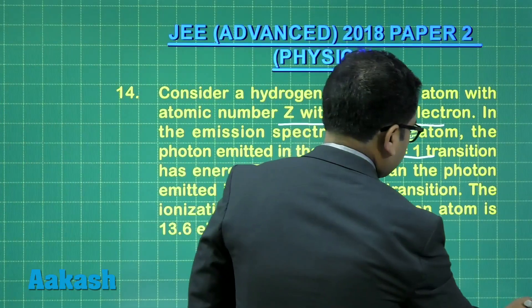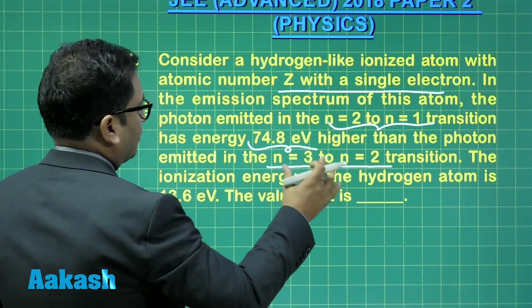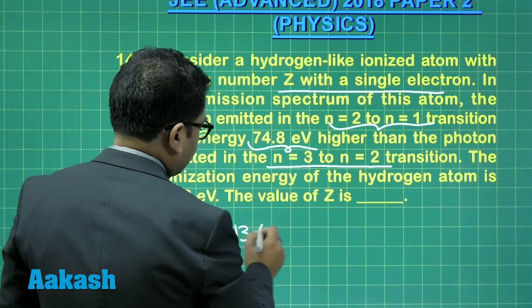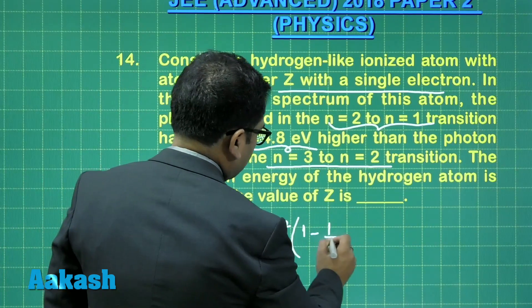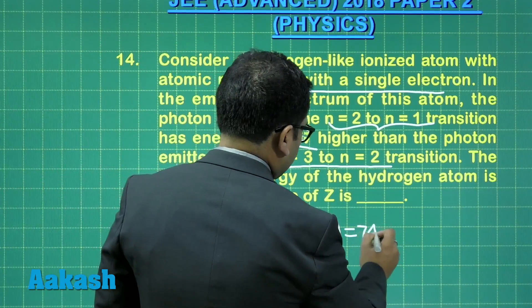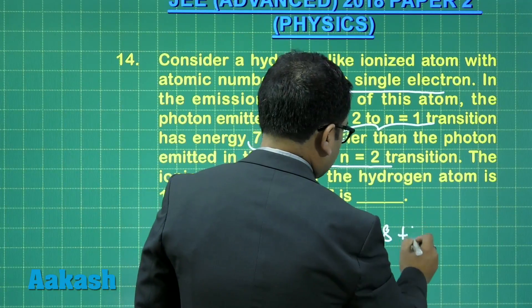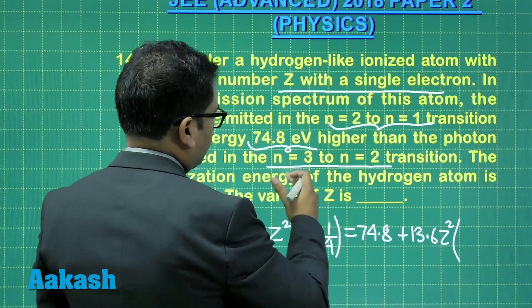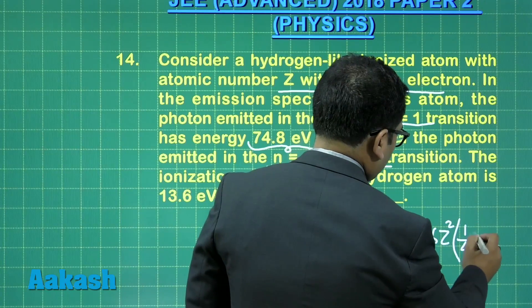The energy emitted during a transition from 2 to 1 is 13.6 Z² times (1 minus 1/4), and this is 74.8 times higher. So that means it equals 13.6 Z² for the transition 3 to 2, which gives (1/4 minus 1/9).